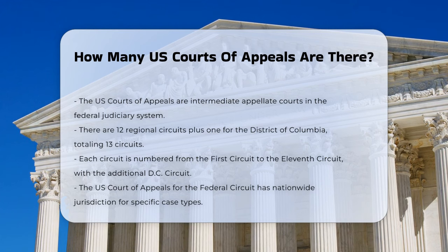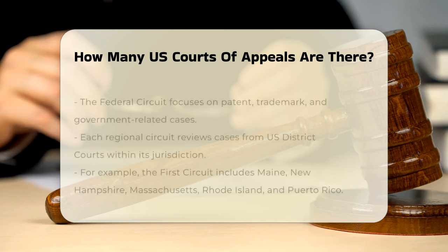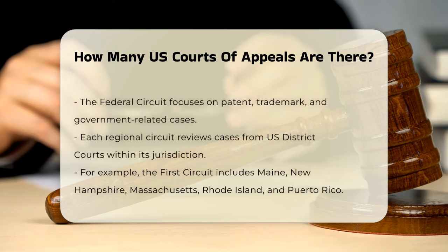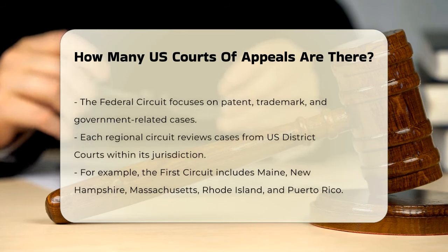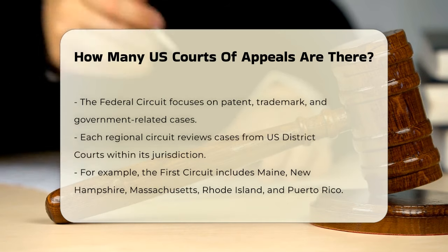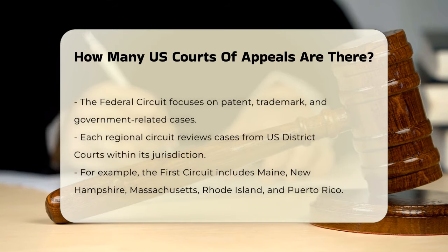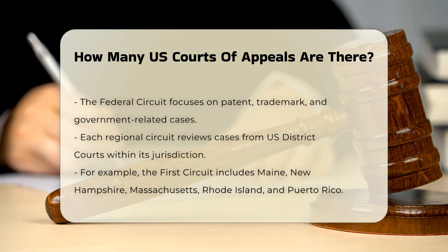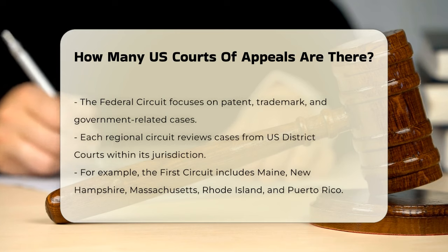In addition to these geographic circuits, there is a 13th court known as the U.S. Court of Appeals for the Federal Circuit. This court has nationwide jurisdiction but focuses on specific types of cases, such as patent and trademark cases, as well as cases involving the U.S. government or its agencies.